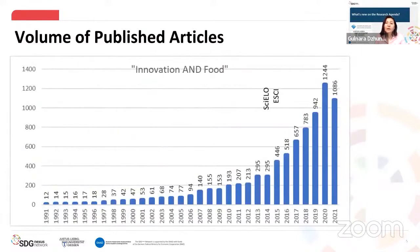The retrieved data show a significant number of published papers during the period 1991 to 2021. The number of articles shows several spikes: a 49% increase in 2007, a 51% increase in 2015, and a 32% increase in 2020 compared to the previous year. In general, the number of published articles is increasing every year.